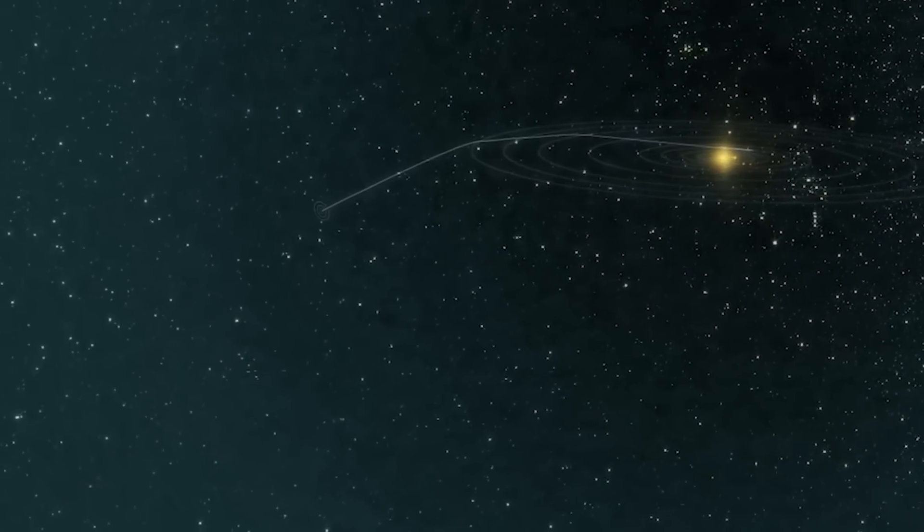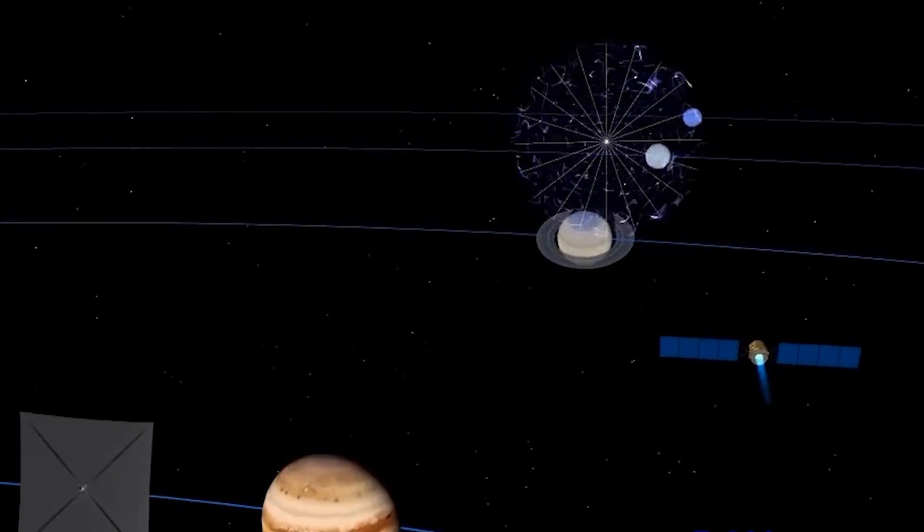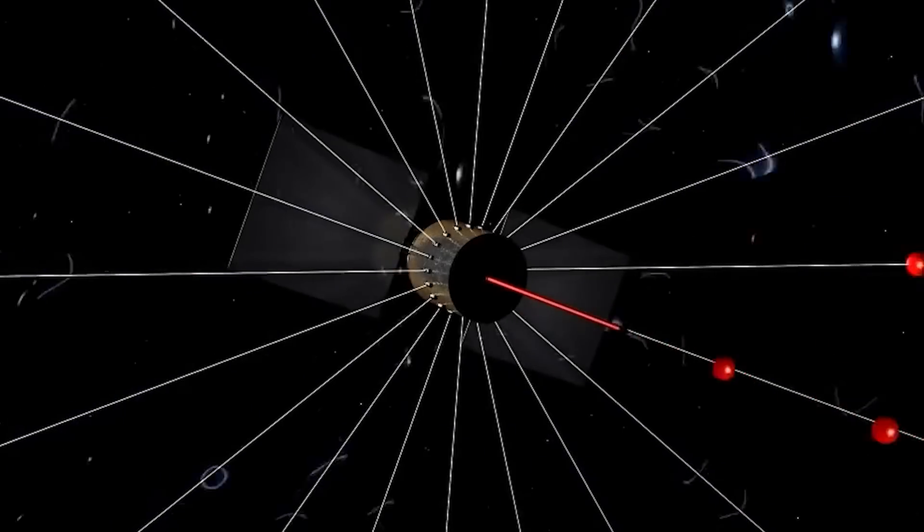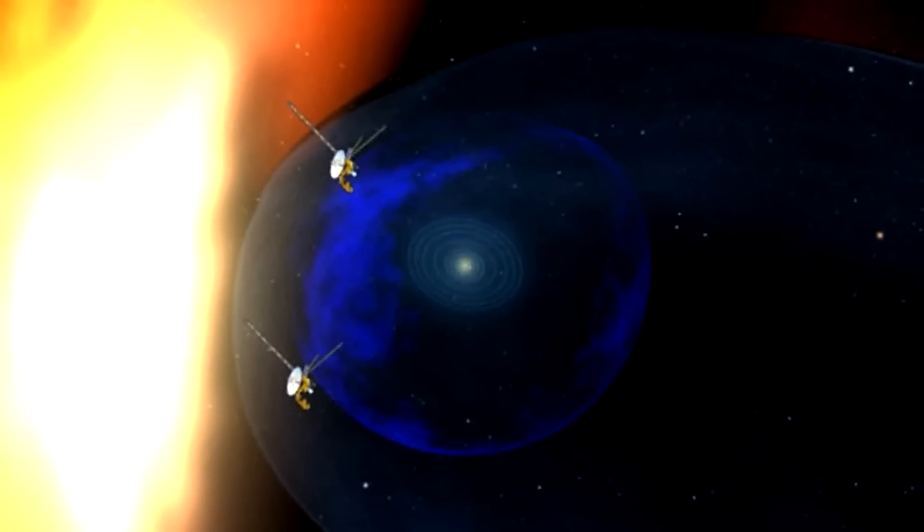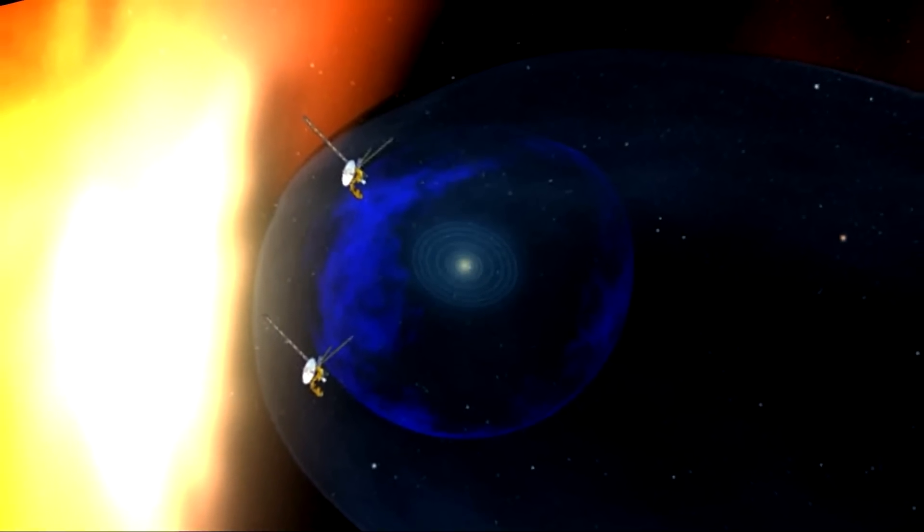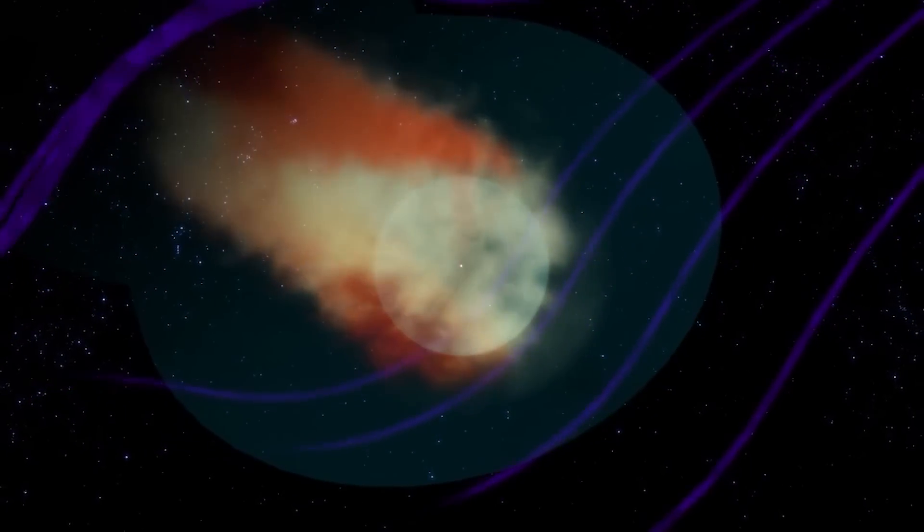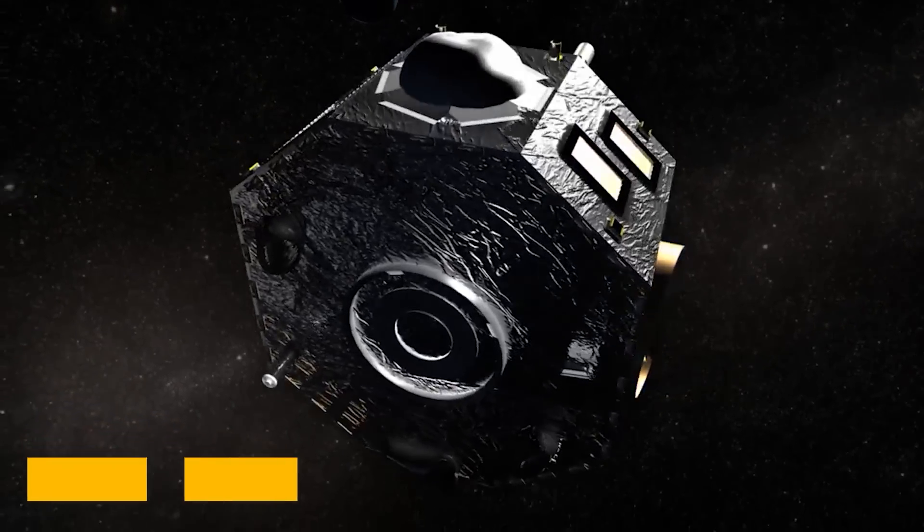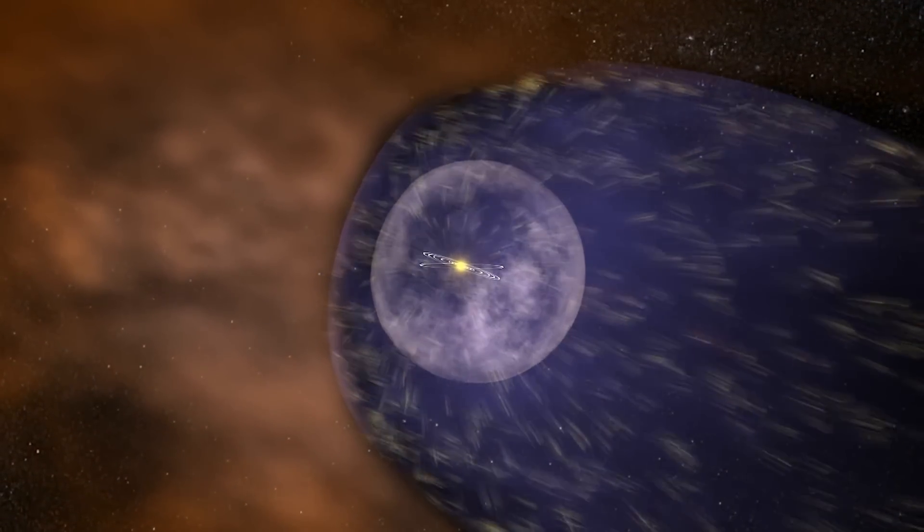Scientists have also stumbled upon something truly bizarre at the edge of our solar system. The heliopause, the boundary between the Sun's influence and interstellar space, seems to be behaving in strange and unexpected ways. This boundary isn't the static barrier scientists once thought it was. Over the last decade, data from Voyager 1 and Voyager 2, combined with observations from NASA's interstellar boundary explorer, IBEX satellite, have revealed that the heliopause is far more dynamic than anticipated.